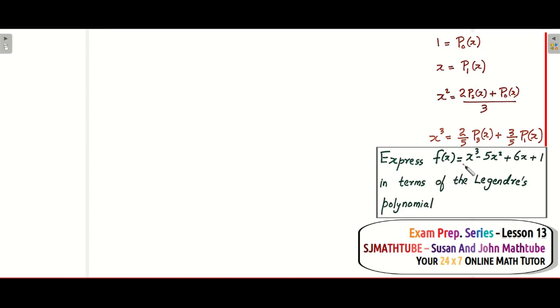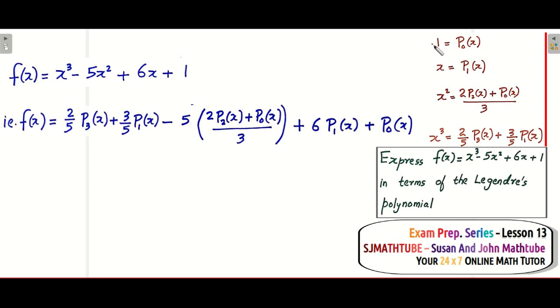For the last time, in your exam you can expect up to x⁵, maybe even x⁶. So let's start with the given polynomial. Replace x³ with (2/5)P3(x) + (3/5)P1(x). x² is (2/3)P2(x) + (1/3)P0(x). x is P1(x), and finally 1 can be replaced with P0(x). That's it! Now use a calculator or any simplification process to simplify - that's the answer.